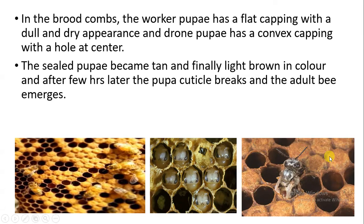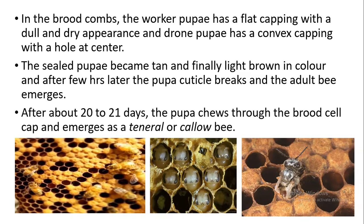After about 20 to 21 days — approximately three weeks after the pupal stage — the adult is formed. The adult first chews through the capping of the brood cell to emerge outside.